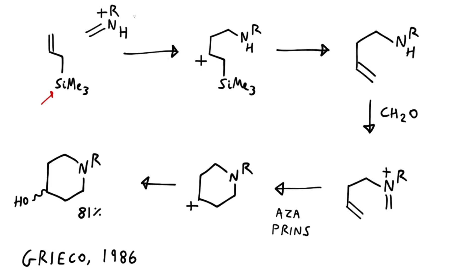The first step that I haven't drawn out is that the amine condenses with formaldehyde to form this iminium, a Mannich-type intermediate. Then because of the cation-stabilizing effect of silicon, this double bond is nucleophilic enough to attack the iminium.